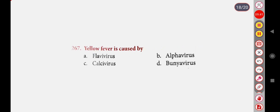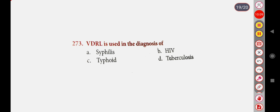Next question: Yellow fever is caused by — Option A: Flavivirus, Option B: Alphavirus, Option C: Calcivirus. Correct answer is Option A: Syphilis — referring to a question about a disease associated with immune system depression, tuberculosis. Correct answer is Option A: Syphilis.